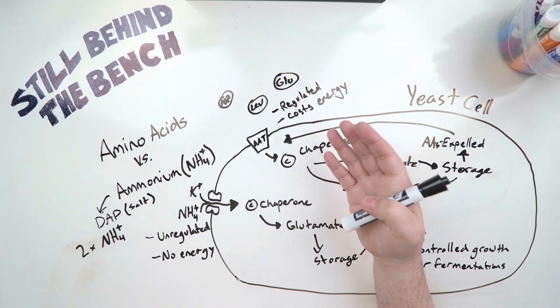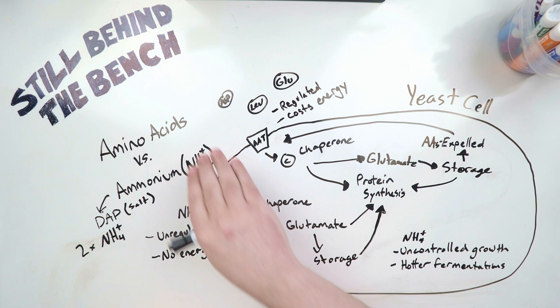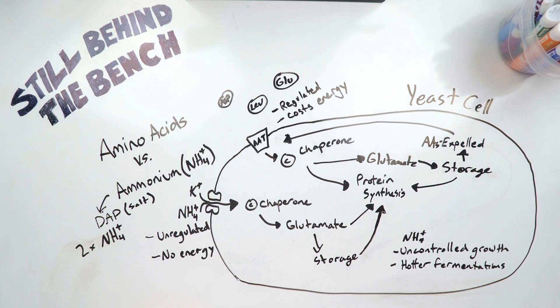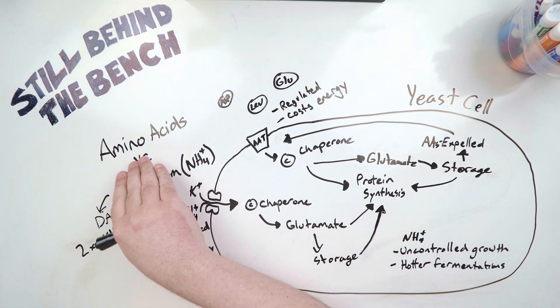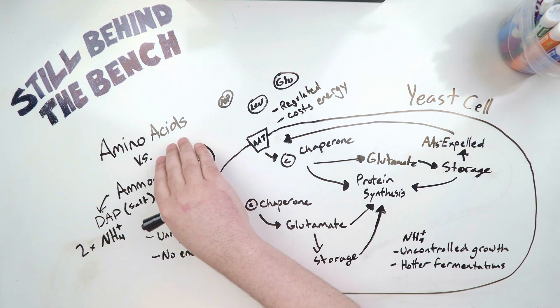But obviously, you'll have to look at the cost effectiveness of using amino acids over ammonium. Most hobbyists, myself included, will use ammonium just because buying a mixed amino acid as a nitrogen source is not very cost effective for us, because it can be quite expensive to do that.